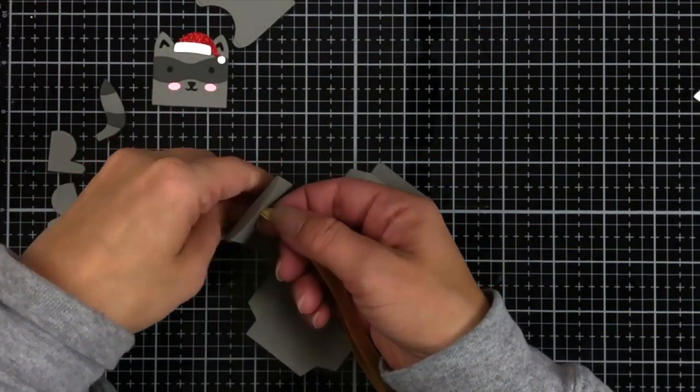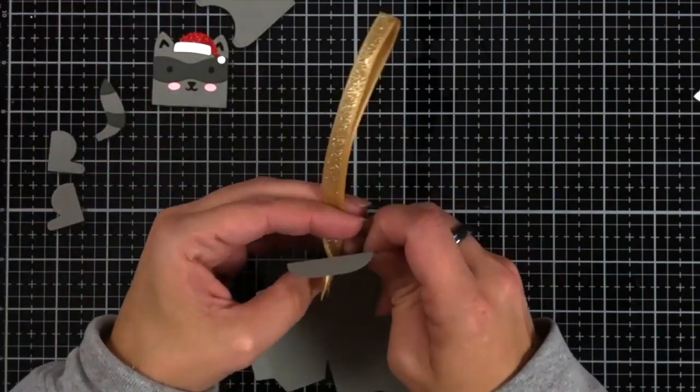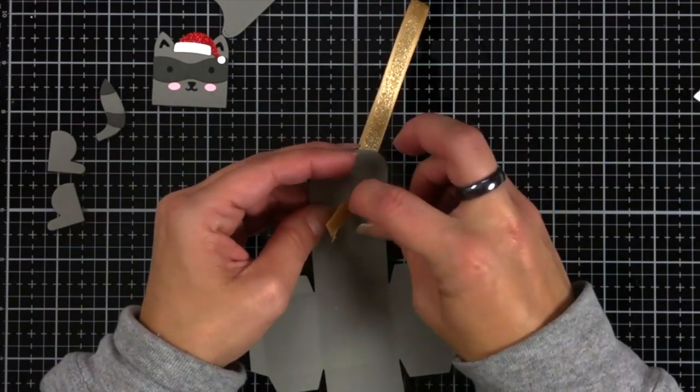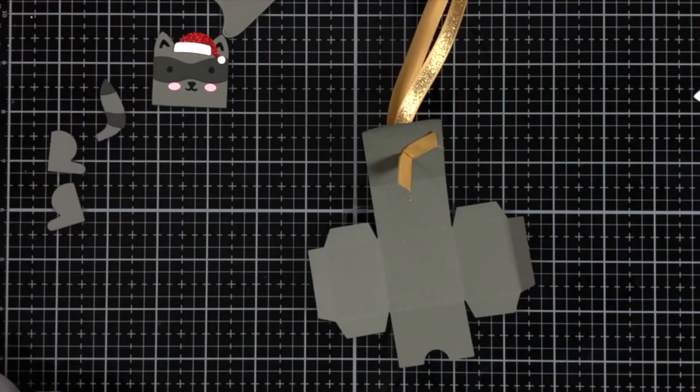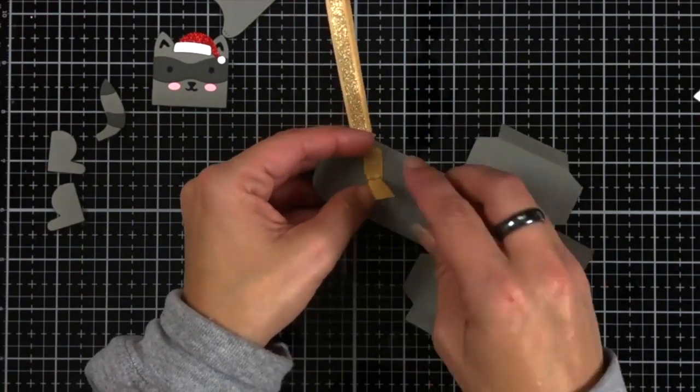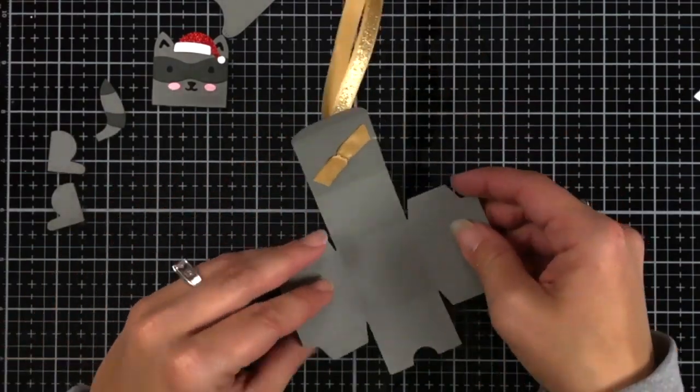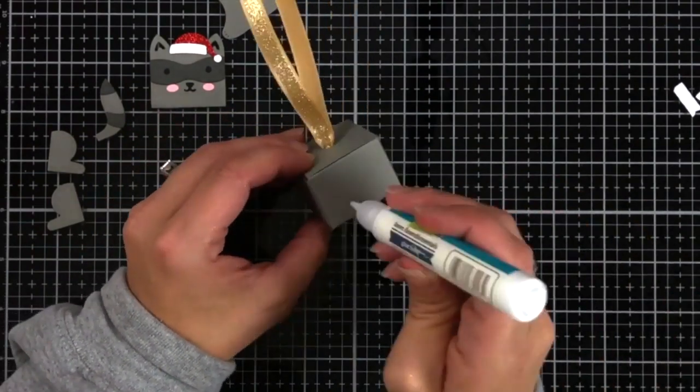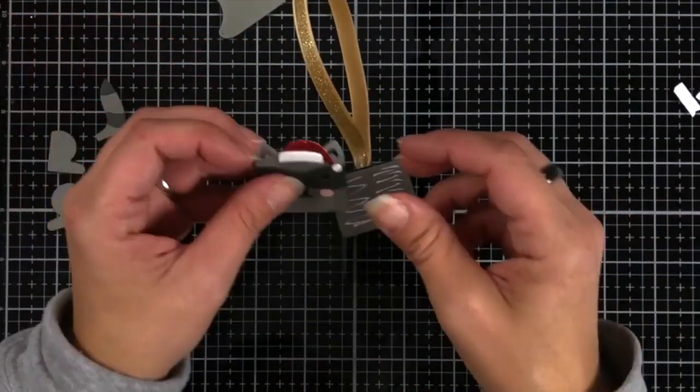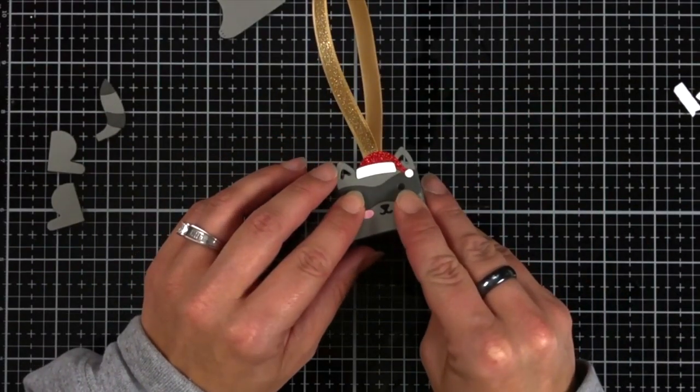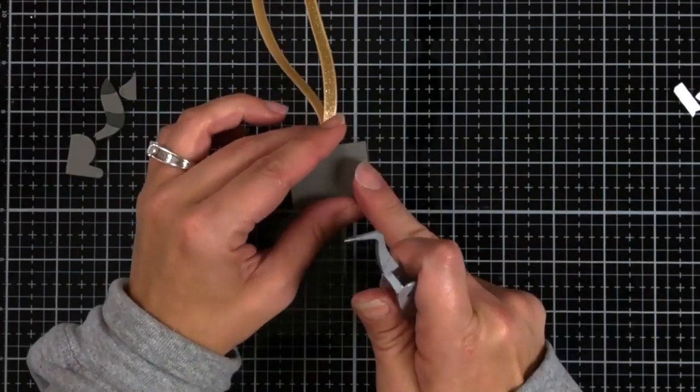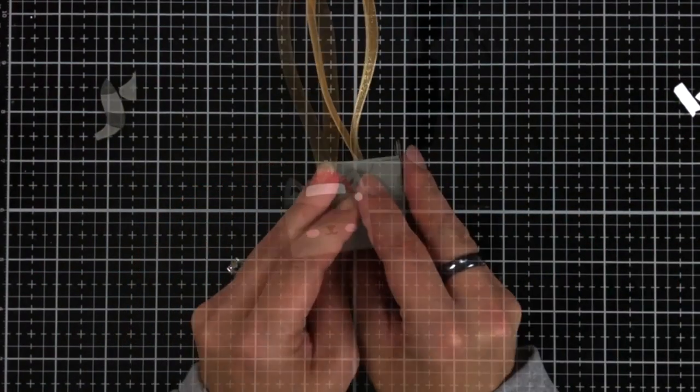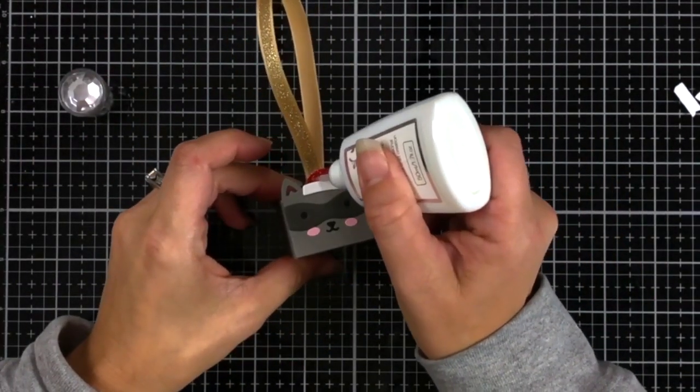So once again, I went ahead and I folded all my lines, reinforced them with the bone folder to create my gift box. I punched that hole through the top of the box, threaded my ribbon through, and then I'm using the glue dots again. I really liked this method. Like I said, it was really clean and those glue dots are really secure. Then I can remove that double-sided adhesive and assemble my box. Now I'm just using liquid glue to attach my raccoon. I did this at the end just because then it was easier for me to work with. That was my personal preference. You could put it together beforehand, but this was just easier for me.